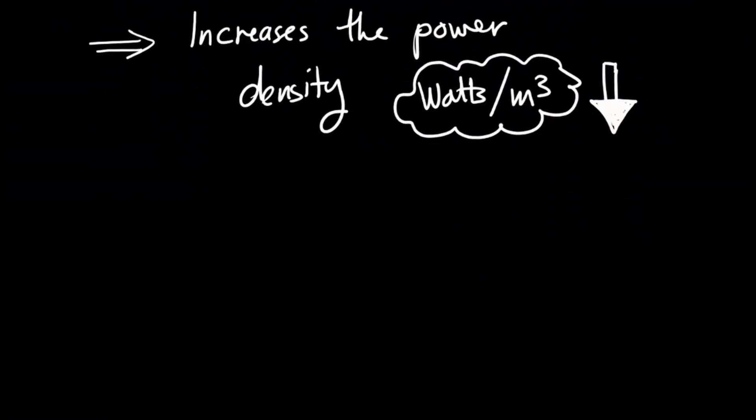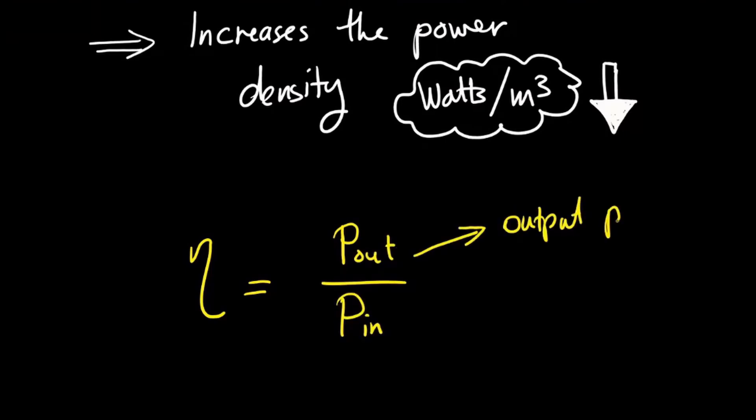By definition, efficiency is the ratio between output power and input power, and we can write it as eta equals Pout over Pin.